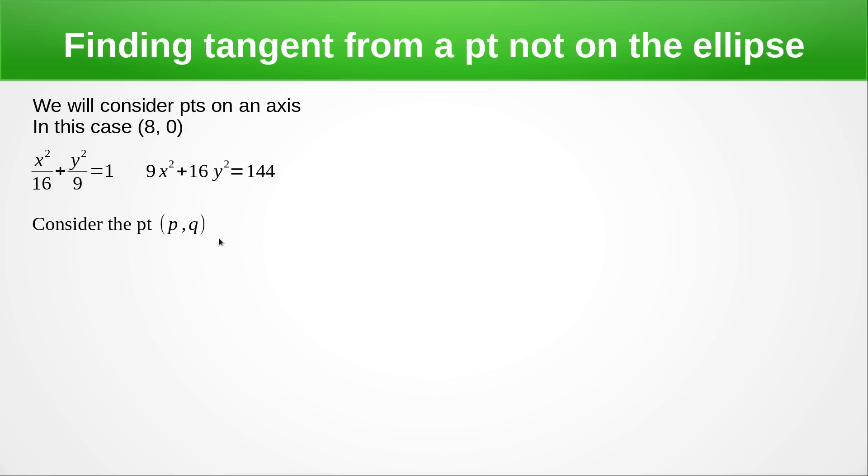That will be important later on. I'll explain why when we get there. So here we go. We differentiate this. I've done it straight away. It was implicitly, but we did it on the last slide. There's nothing new there. We substitute in p and q and we get the gradient of the tangent. It's going to be -9p / 16q.